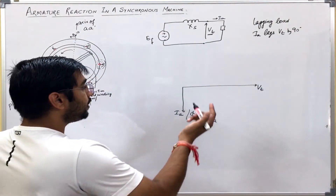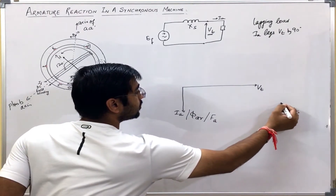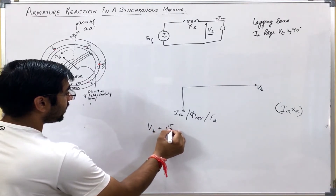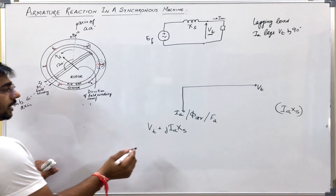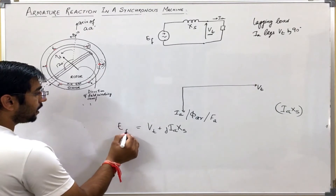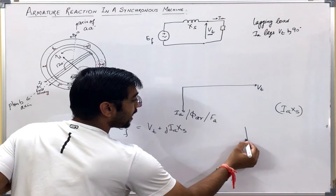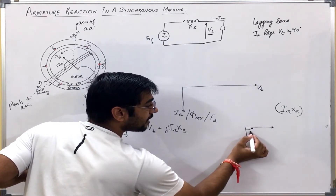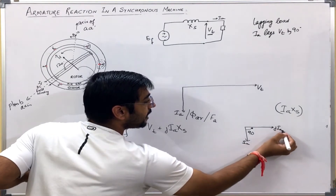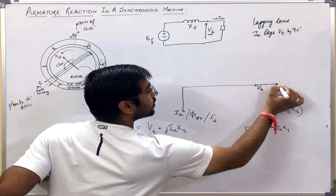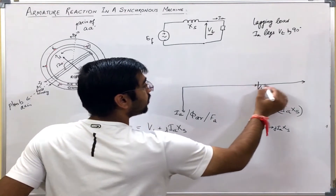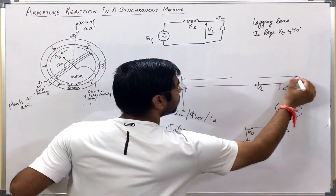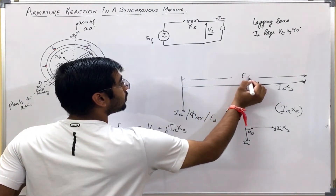So if I somehow get the value j·Ia·Xs — so Vt plus j·Ia·Xs, what will it give? It will give me Ef. So if Ia is like this, what will be the value of j·Ia·Xs which is leading this by 90 degrees? j·Ia·Xs will be in this direction, that is, leading the current by 90 degrees. This is Ia and this will be j·Ia·Xs. So j·Ia·Xs can be written like this — this part is Ia·Xs. So this total will come out to be Ef.